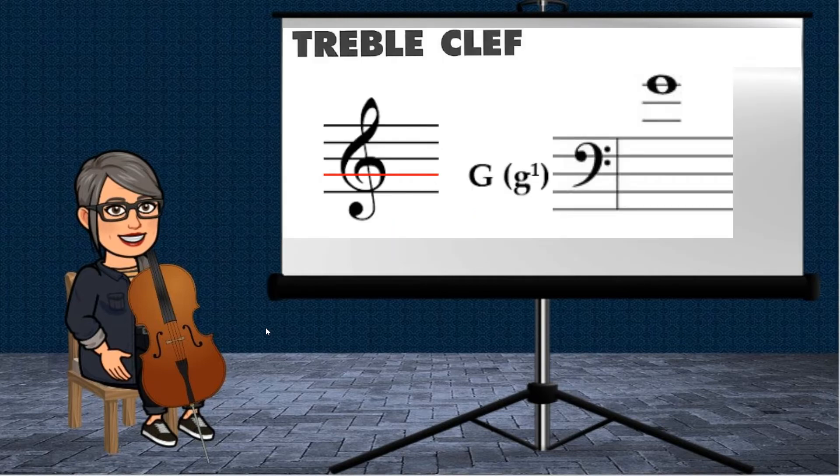Alright, treble clef now. Treble clef is known as the G clef, and as you can see here, it is centered on the second line of the music staff. This right here is G. It is the same G as in bass clef, fourth finger in fourth position on the A string. So this here is G, and as you can see, if we place that note here, it would give us much more room to write more notes instead of adding extra ledger lines.